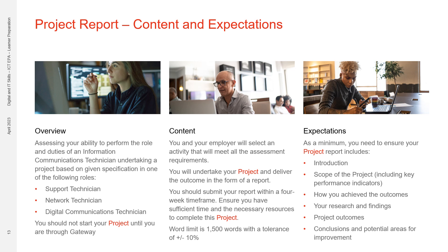The word limit for this assessment is 1,500 words with a tolerance of plus or minus 10%. This is a strict word count and not being within this tolerance will result in a fail for this component. As a minimum, your project report must include an introduction, the scope of the project including any key performance indicators, how you have achieved the outcomes, your research and findings, the project outcomes, and finally your conclusion and any potential areas for improvement.